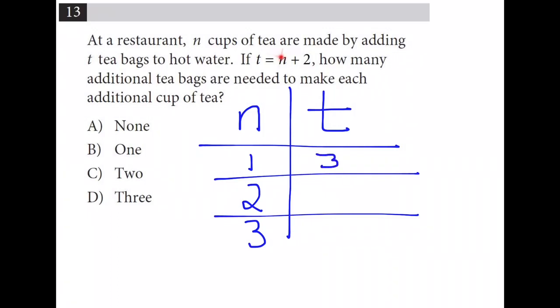If we plug in a 2, it becomes 2 plus 2, which is 4, and 3 plus 2, which is 5. So, for each additional cup of tea, we need 1 additional tea bag. The confusing part is that original plus 2, which is a starting value more than an additional tea bag needed per cup of tea.